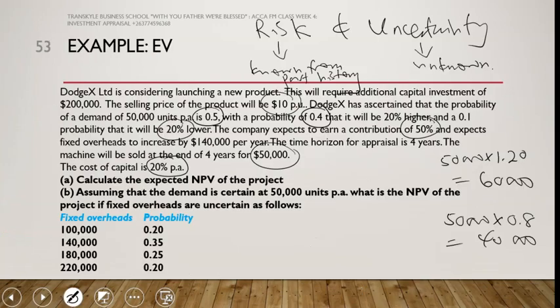Moving on to Part B: assuming that demand is certain at 50,000 units per annum, what is the NPV of the project if fixed overheads are uncertain? Using the given probabilities for the fixed overheads, we can determine the expected fixed costs.